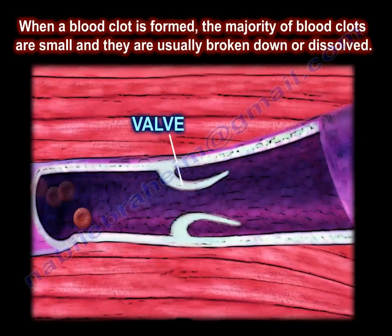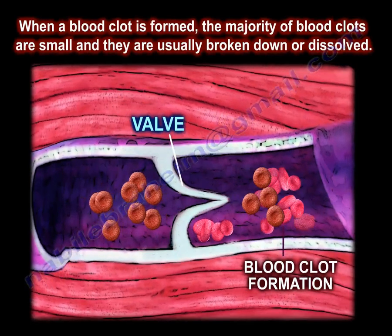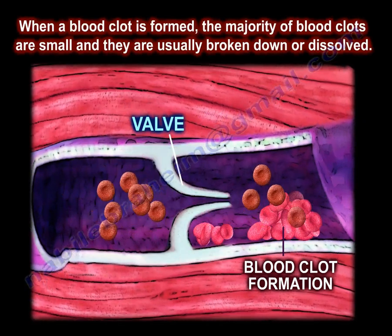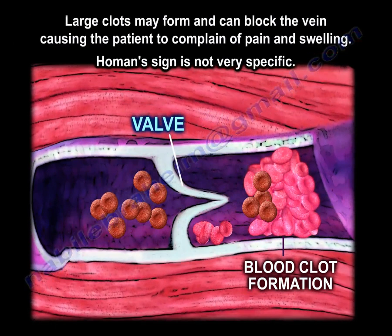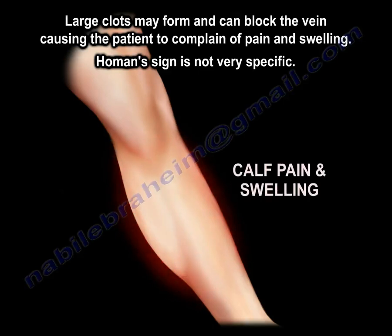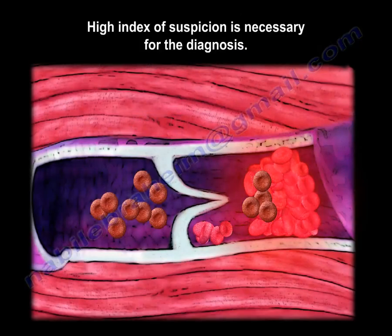When a blood clot is formed, the majority of blood clots are usually broken down or dissolved. However, large clots may form, and they are a problem. They can block the vein, causing the patient to complain of pain, discomfort, and swelling. Homans' sign is usually not very specific. A high index of suspicion is necessary for the diagnosis.